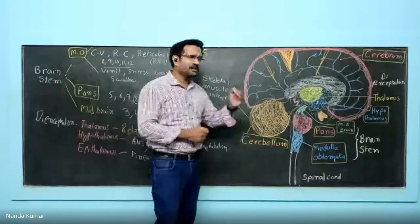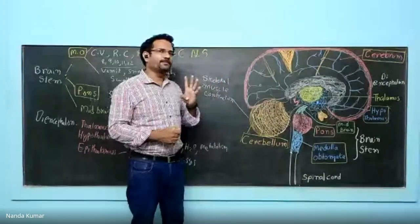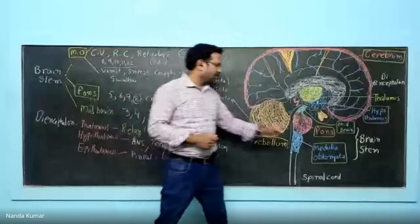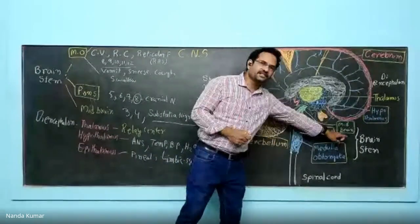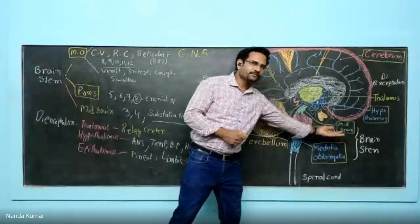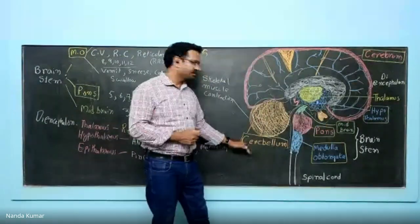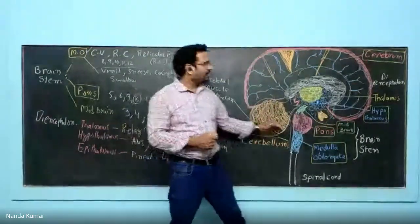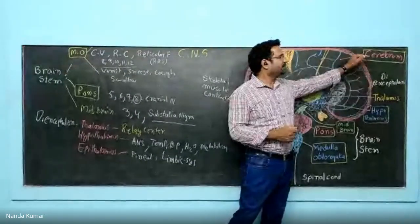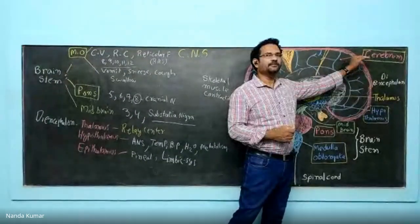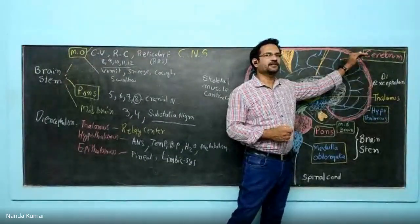There are four major parts of the brain. First one is brain stem, next cerebellum, then diencephalon, and then cerebrum or cerebral cortex.